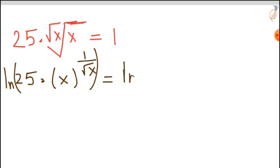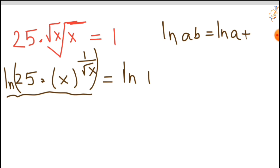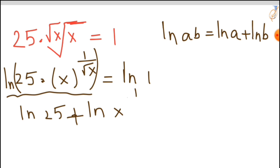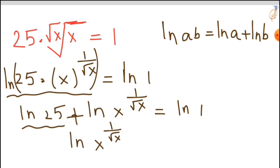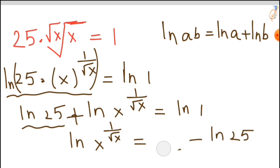Observe the left-hand side — it is in the form of natural log of a times b, so we can write this as natural log of a plus natural log of b. That gives us natural log of 25 plus natural log of x to the power 1 over root x, equal to natural log of 1. Rearranging: natural log of x to the power 1 over square root of x equals natural log of 1 minus natural log of 25.